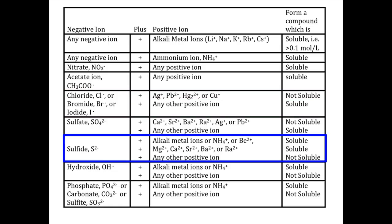It might be a little easier to see with row seven, where there is only one negative ion listed, sulfide, S2-. Clearly, each of the three lines in the rest of the row refers to the sulfide ion, with those ions in the first two lines forming soluble compounds, and any other positive ion forming compounds that are not soluble.